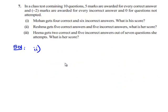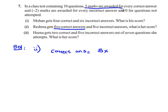We'll see the second part. Reshma gets 5 correct answers and 5 incorrect answers. What is her score? First, we'll compute her marks for correct answers. She gets 5 correct answers and 5 marks are awarded for every correct answer. Therefore, 5 × 5 gives the total marks obtained by Reshma for correct answers, which equals +25.